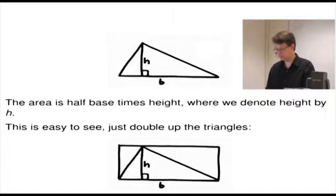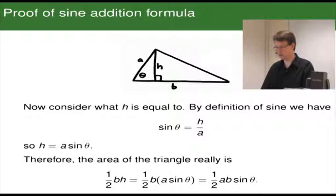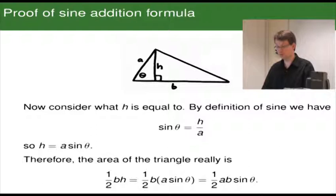Let's go back to the triangle with A, B, and theta on it, and consider what H equals for this triangle. By definition of sine, sine theta equals H over A — that's opposite over hypotenuse — so H equals A sine theta. Therefore, the area of the triangle is half base times height, that's half BH, which equals half B times A sine theta. And that, of course, equals one half AB sine theta. So the area really is half AB sine theta.